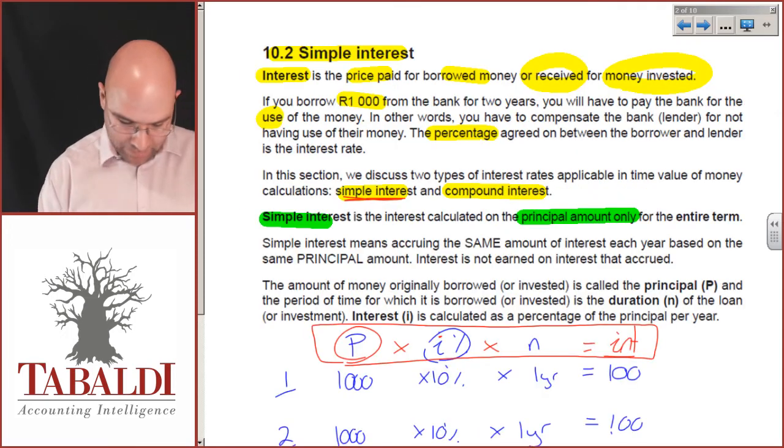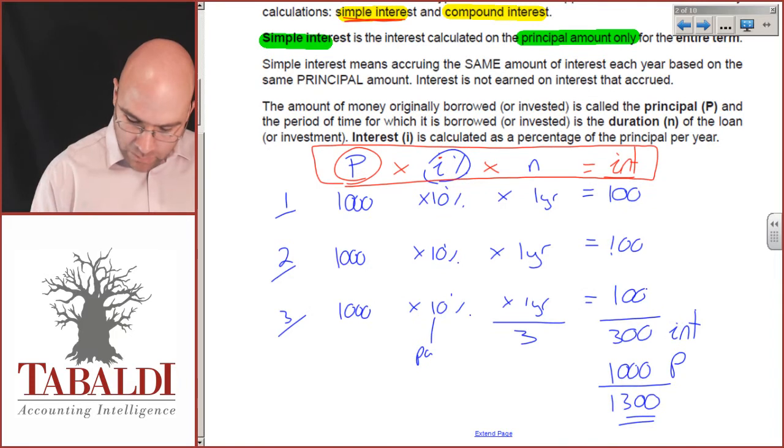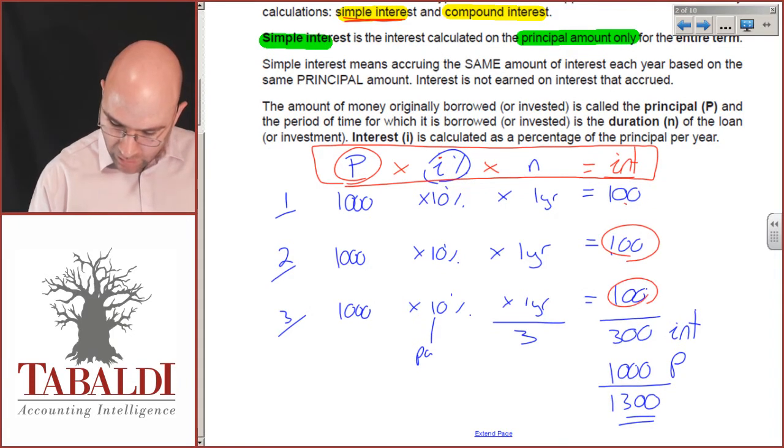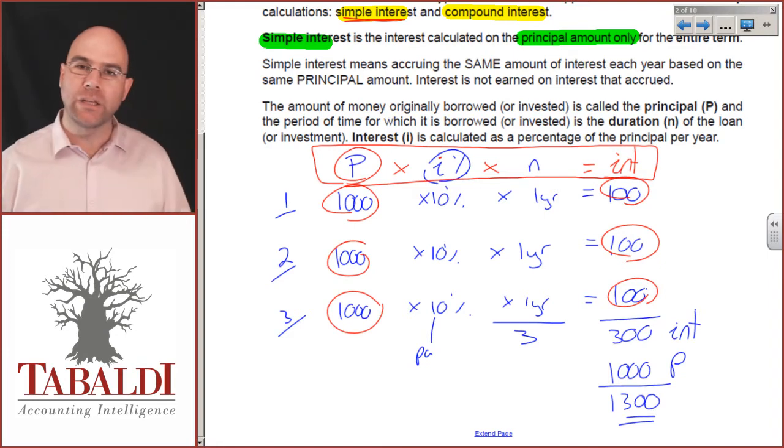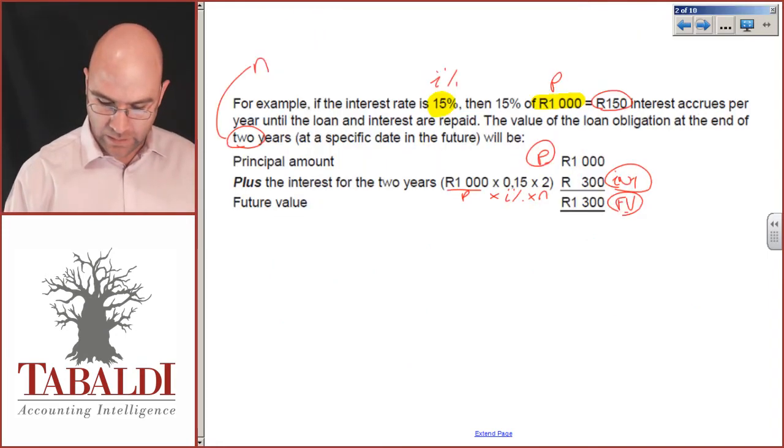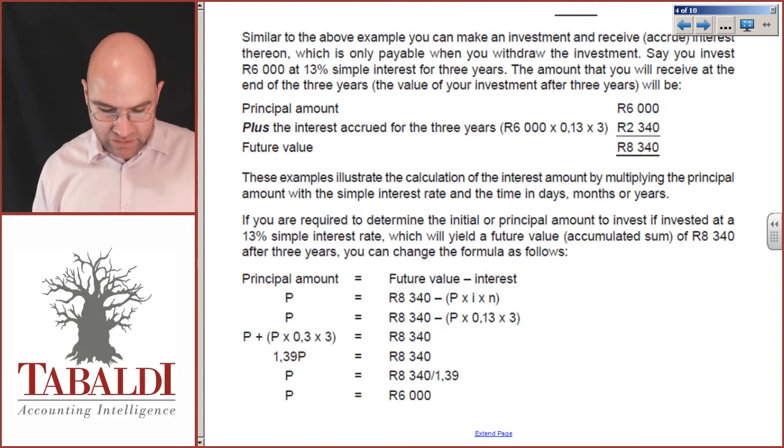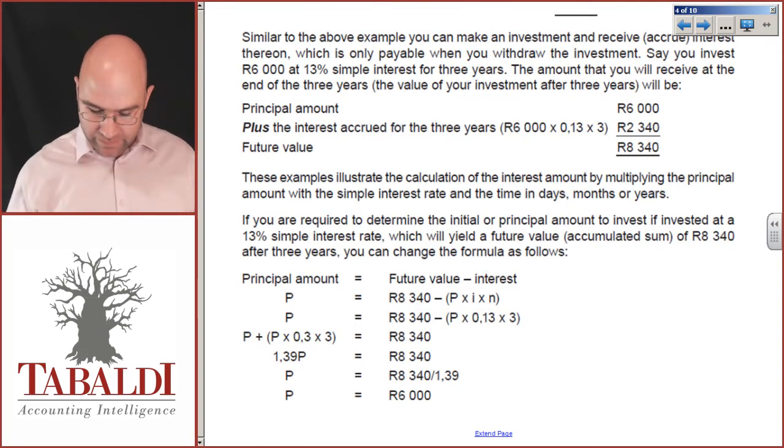And the principal plus the interest in rand value gives me the future value of 1,300. What you will note, if I go back to my previous illustration, I'm working out interest every year on the original principal. I'm not compounding or adding any of the interest to calculate further interest. Then, and last example, also out of the UNISA study guide, it flows.